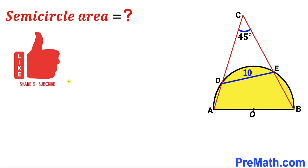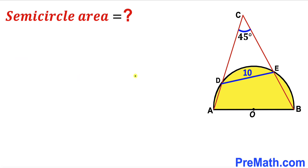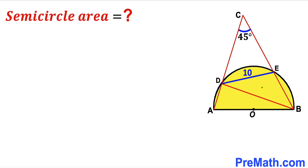Please don't forget to give a thumbs up and subscribe, and keep in mind that this figure may not be 100% true to scale. Let's get started. Since we are interested in calculating the area of this yellow shaded semicircle, we are going to calculate the radius of this semicircle first. I have connected these points B and D, as you can see.